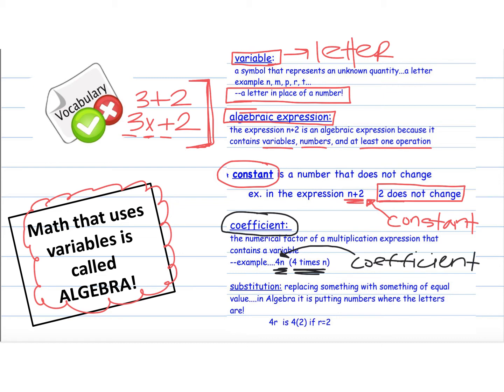And we'll go through these words again in class tomorrow. And then substitution is replacing something with something of equal value. So basically, you could just write putting numbers where the letters are. That's what substitution is, putting numbers where the letters are. So if we look at 4r, which remember is the same as 4 times r, this little dot means multiplication. And then if we're told that r equals 2, then instead of r, we would do 4 times 2.